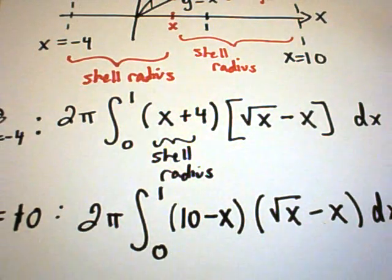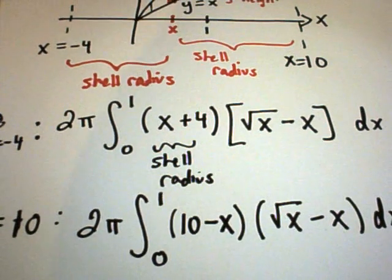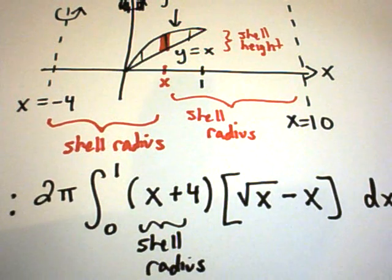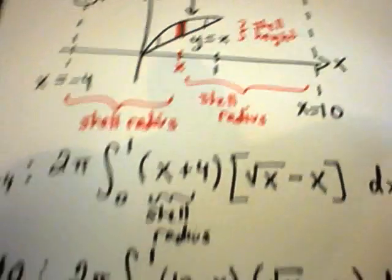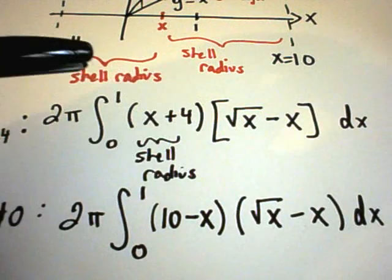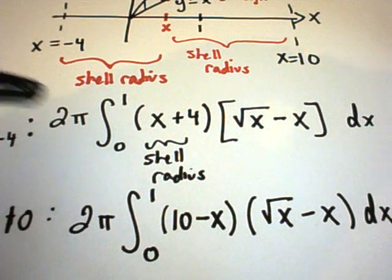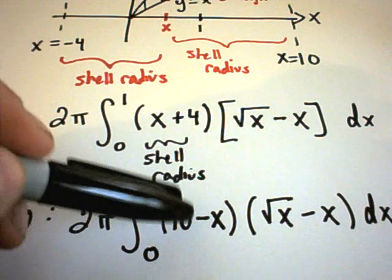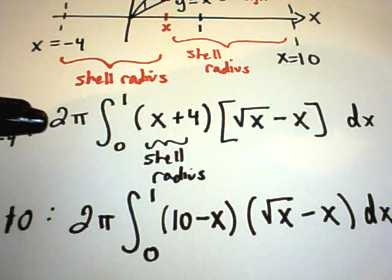When your region doesn't change, the shell height doesn't change at all. The only thing that does change is simply the shell radius. Notice your limits of integration are the same too. So the only thing that you have to tweak, depending on what you're rotating about, is the shell radius.